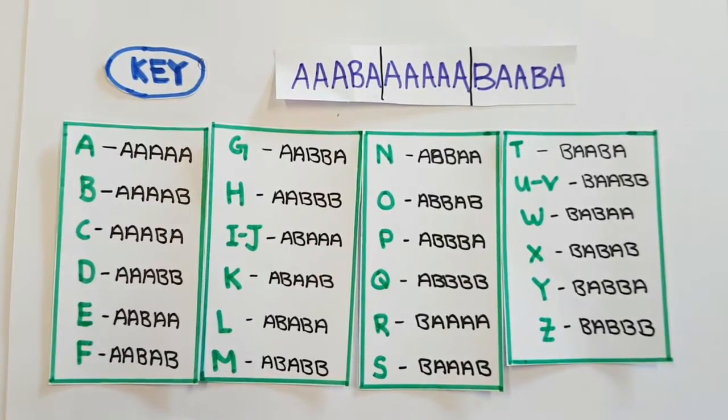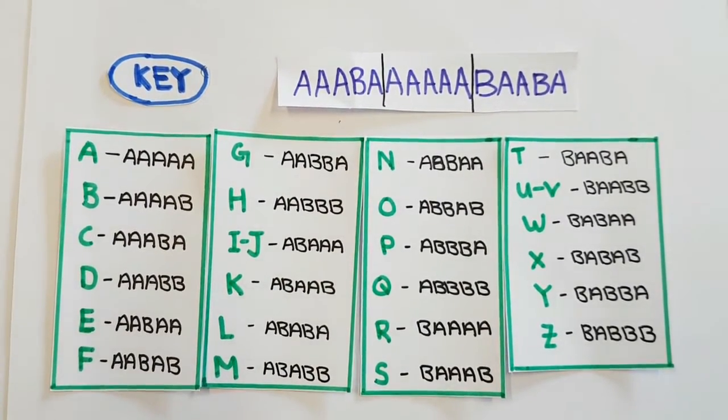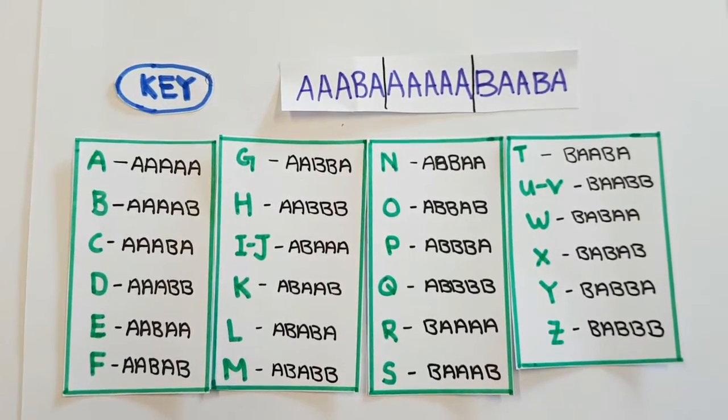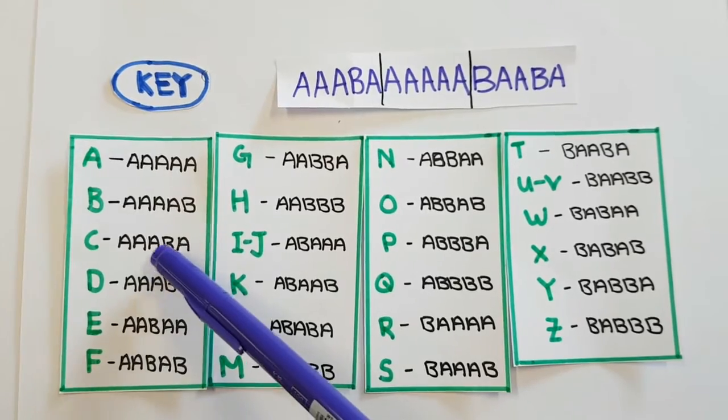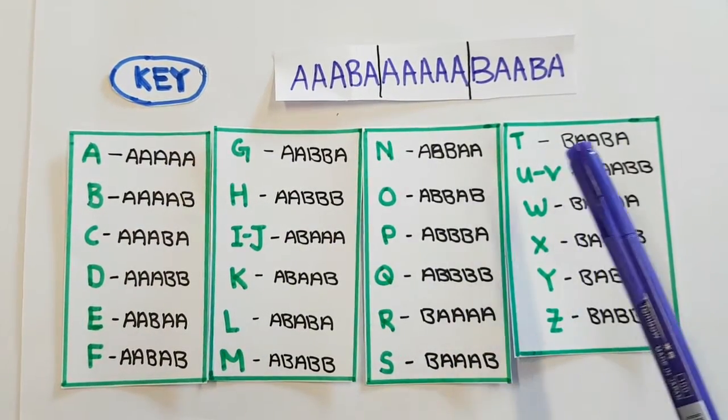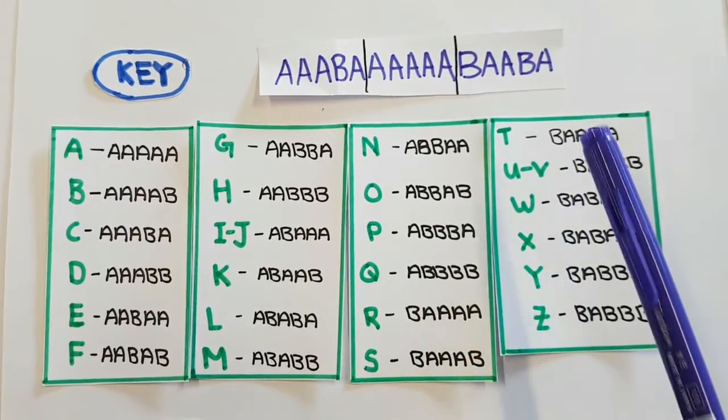For example, CAT will be AAABA AAAAA BAABA. When encrypted with Baconian cipher, a word with three letters will have 15 encrypted letters.